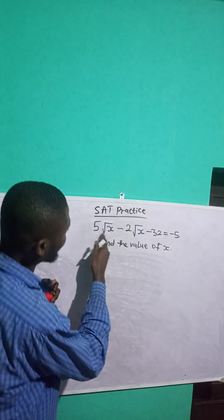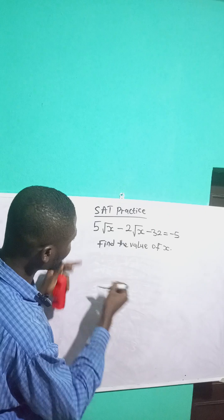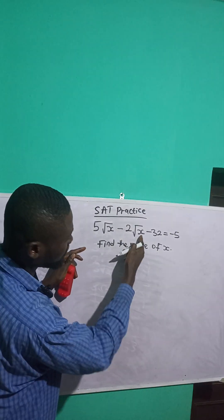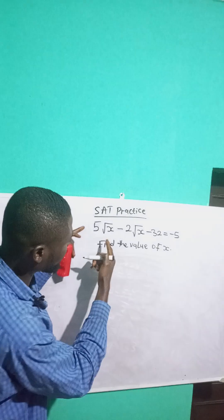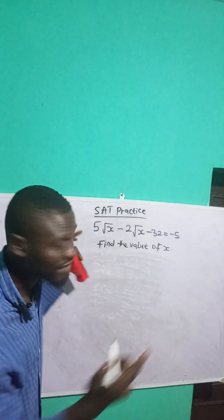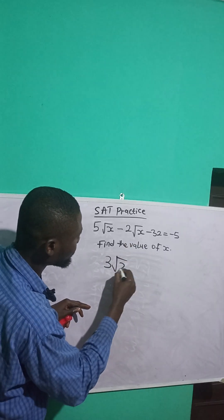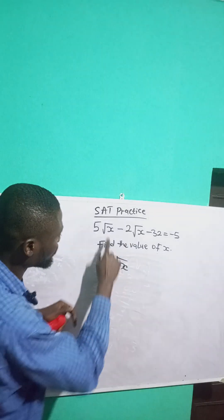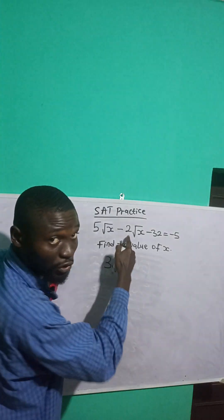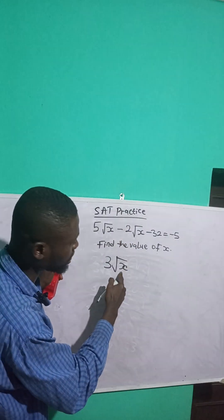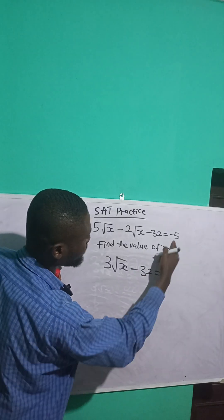Let's solve this: 5√x minus 2√x minus 2 is equal to minus 5. Notice that √x appears in both terms. I'm going to subtract the coefficients: 5 minus 2 is 3, and since √x is common, I bring it down. So we get 3√x, and minus 2 is equal to minus 5.